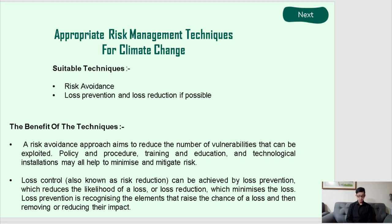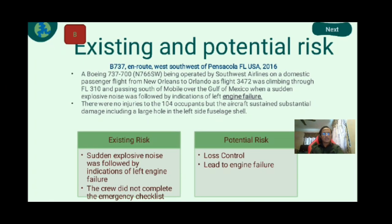For appropriate risk management development techniques for climate change, we are using risk avoidance, loss prevention, and loss reduction where possible. A risk avoidance approach aims to reduce the number of vulnerabilities that can be exploited. Policy and procedure training, education, and technological installation may all help to minimize and mitigate risk. Loss control, also known as risk reduction, can be achieved by loss prevention, which reduces the likelihood of loss, or loss reduction, which minimizes the loss by recognizing elements that raise the chance of a loss and removing or reducing their impact.